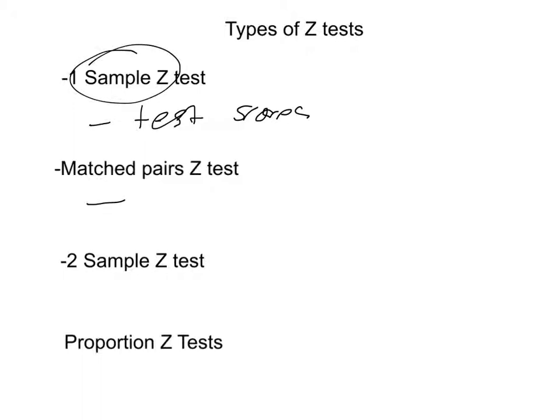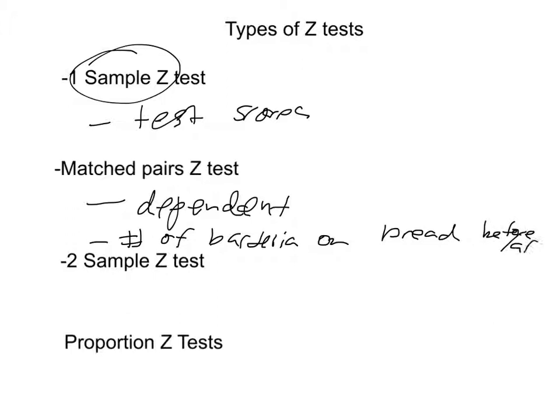Then we have match-pair z-test. And the thing to remember with match-pairs is you only use match-pairs versus two-sample z if their situations are dependent. Two things are dependent on one another. So for this, you might do number of bacteria on bread before and after something. It's the same piece of bread. So you're going to use a match-pairs.